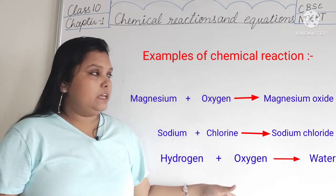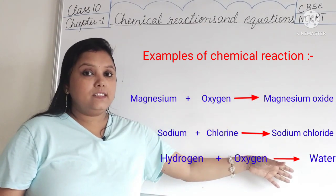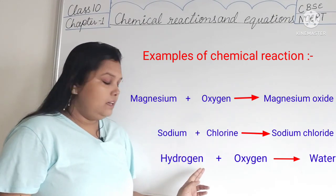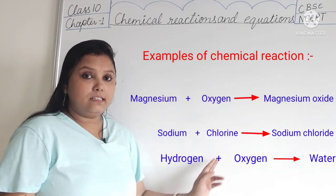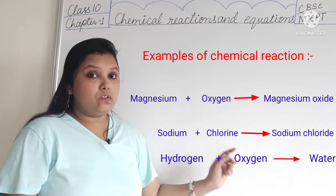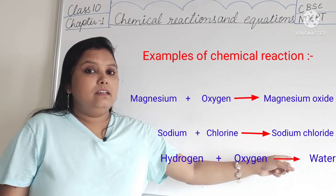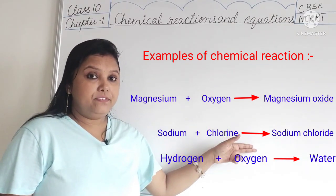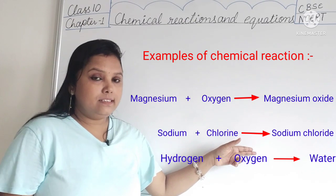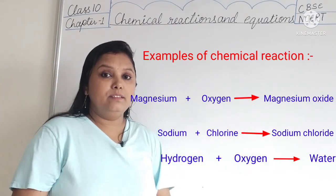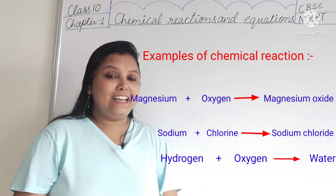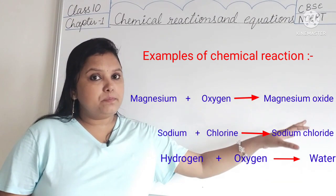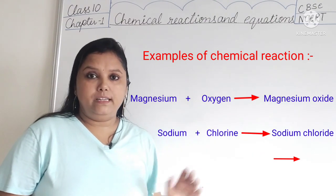So in all of these cases, new substances with entirely new properties are formed. Here you can see hydrogen is a gas and oxygen is also a gas but H2O is liquid. Sodium metal reacts with chlorine which is a poisonous gas to form sodium chloride, which we eat every day. Here we can see that in chemical reactions, new substances are formed with entirely new properties.